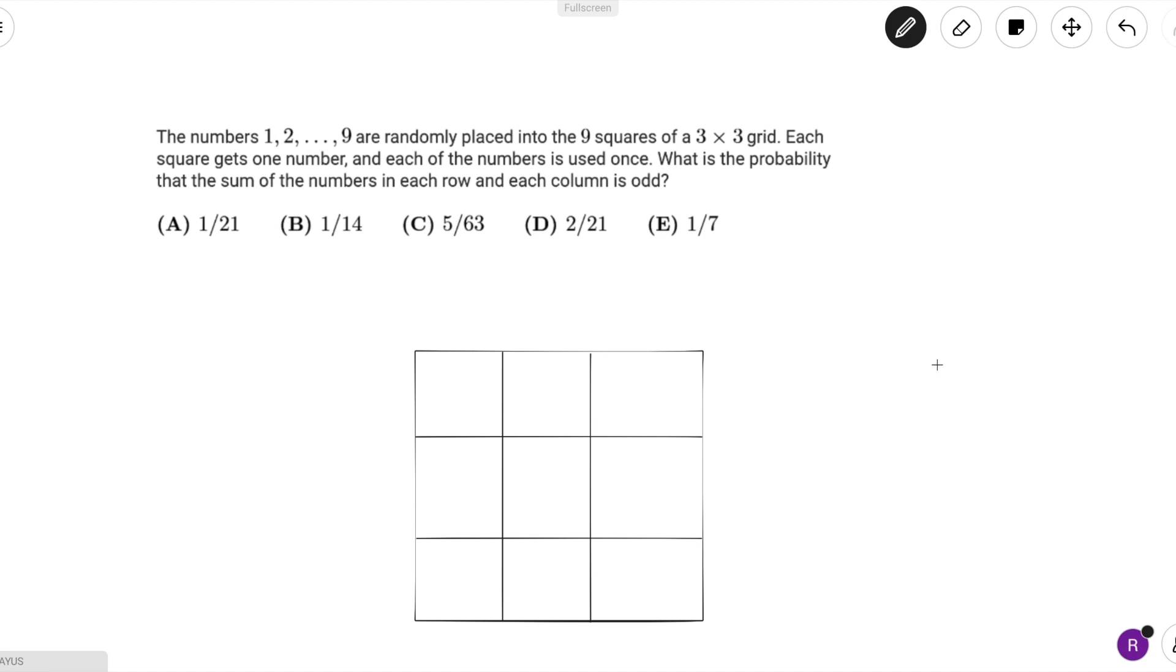The problem reads: the numbers 1, 2, all the way to 9 are randomly placed into the 9 squares of a 3x3 grid. Each square gets one number and each of the numbers is used once. What is the probability that the sum of the numbers in each row and each column is odd?